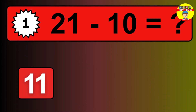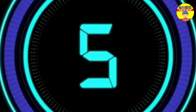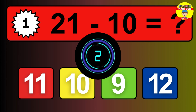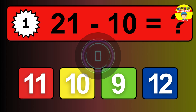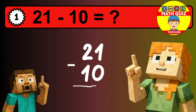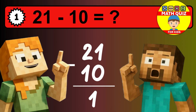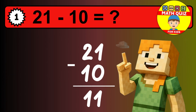What is 21 minus 10? Time to think. Let's solve this step by step. We start with the units: 1 minus 0 is 1. Then we go to the tens: 2 minus 1 is 1. The final answer is 11.